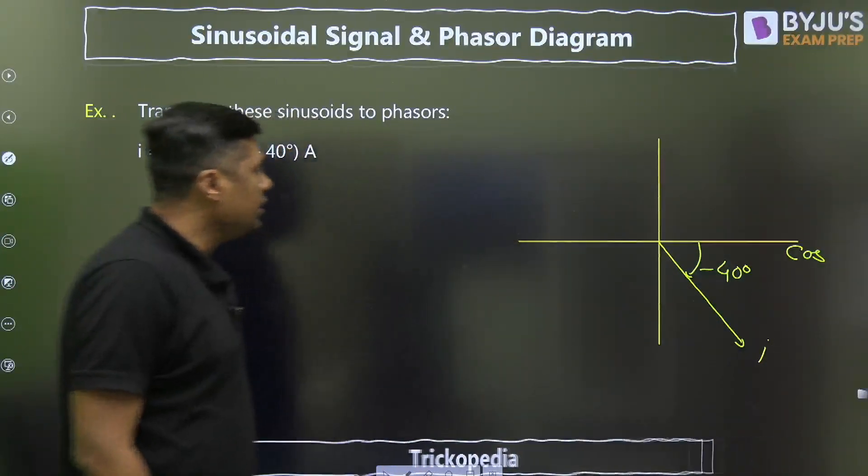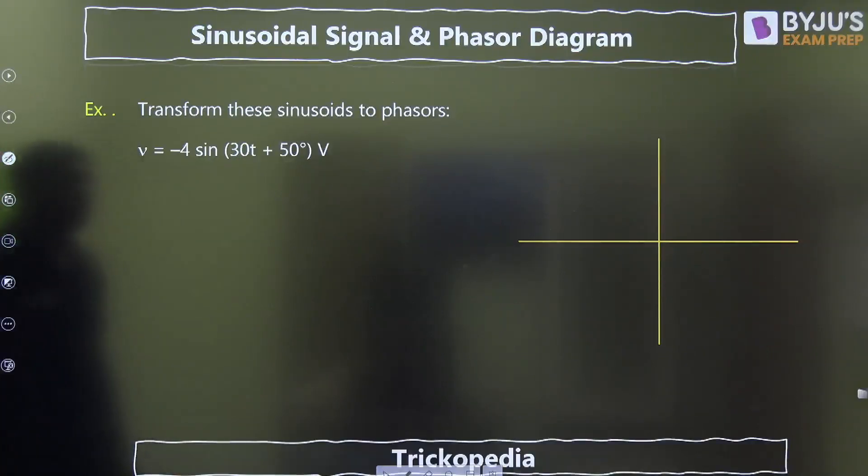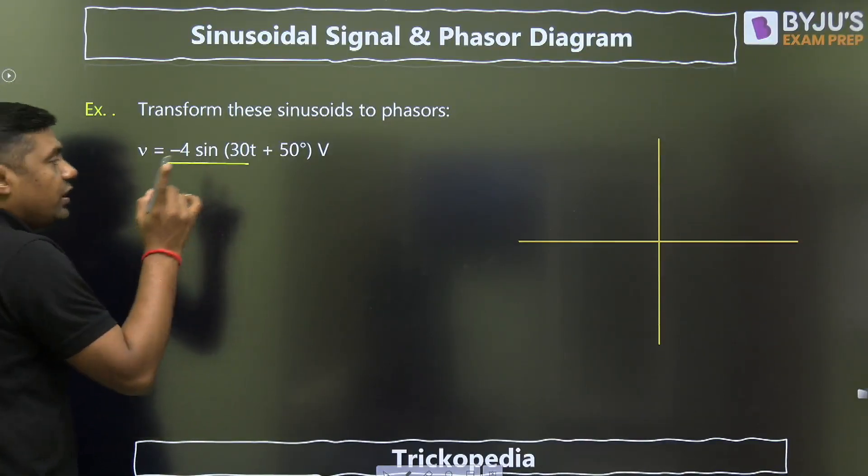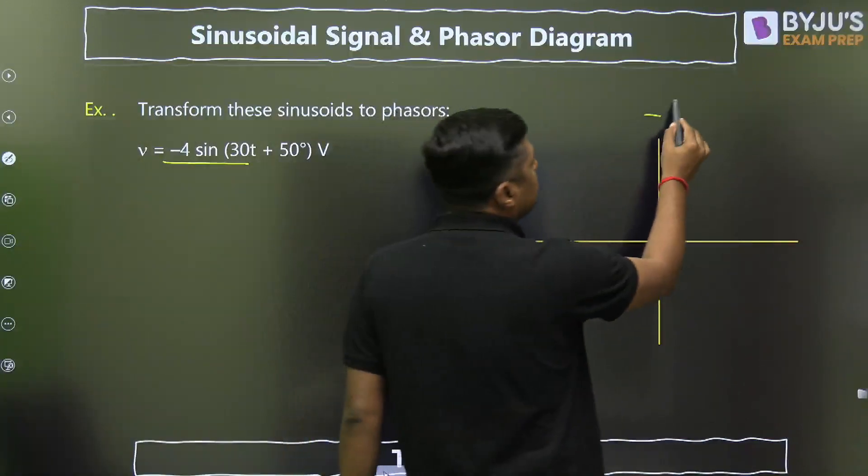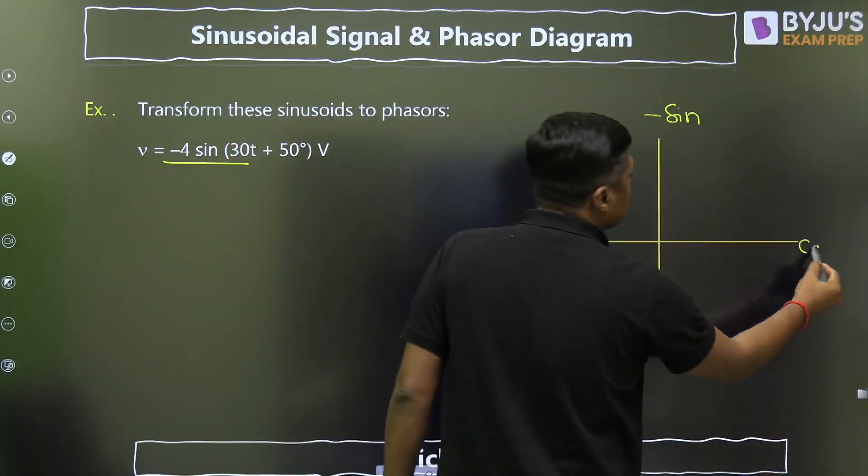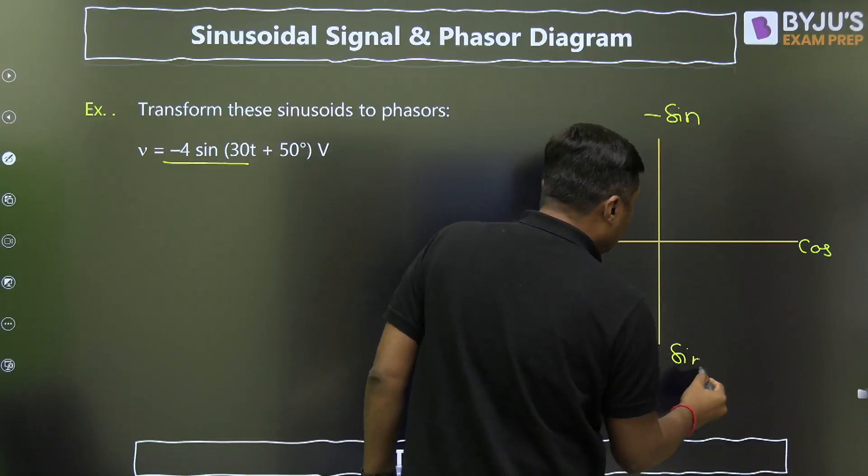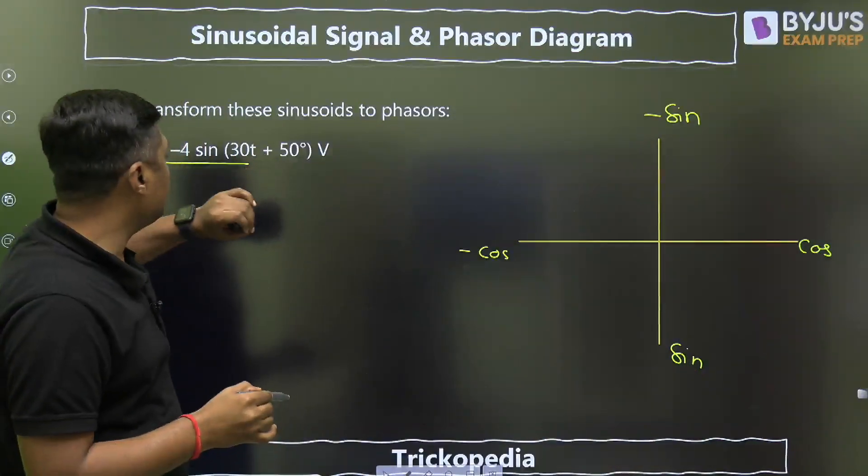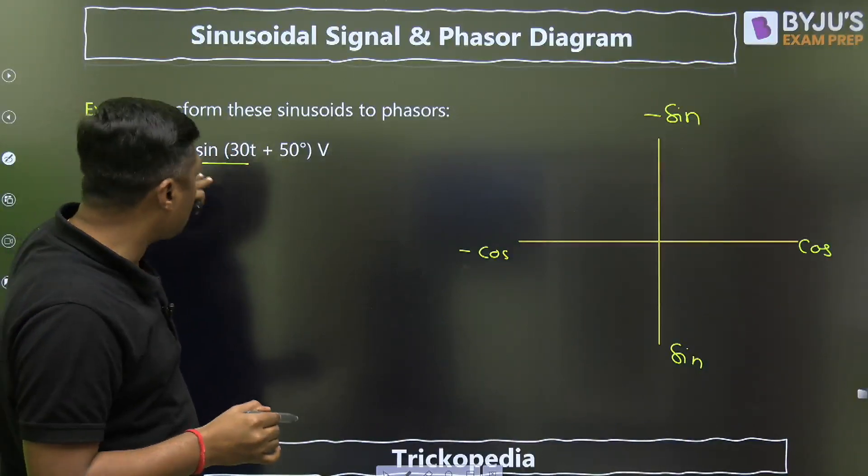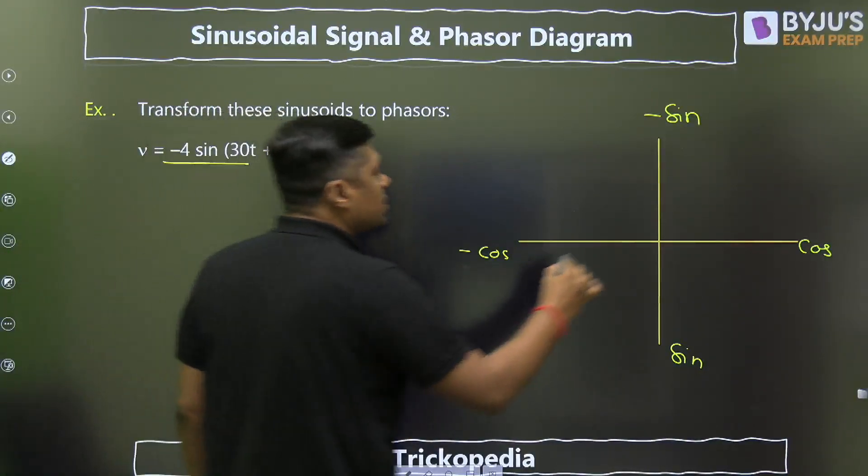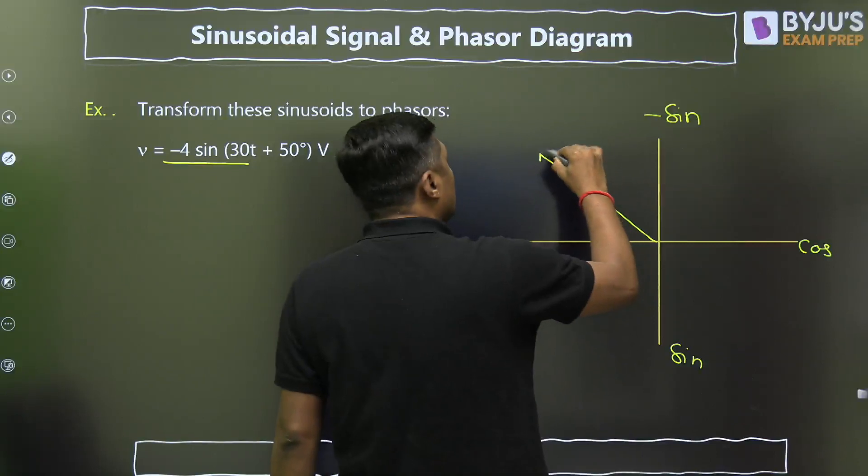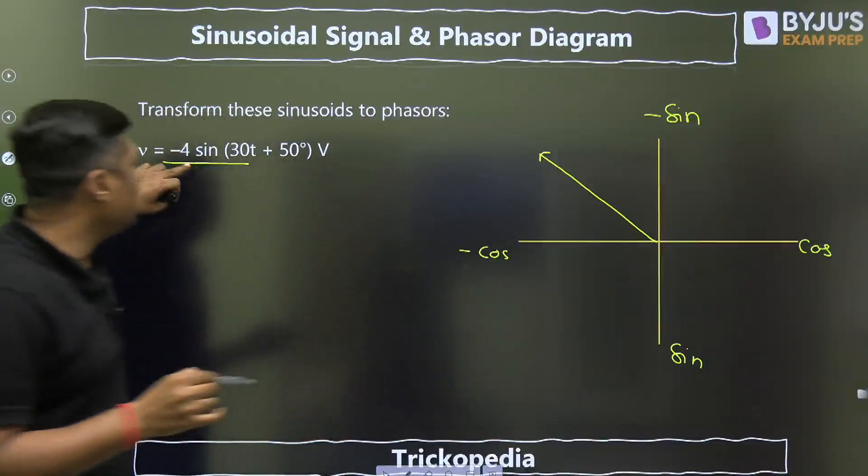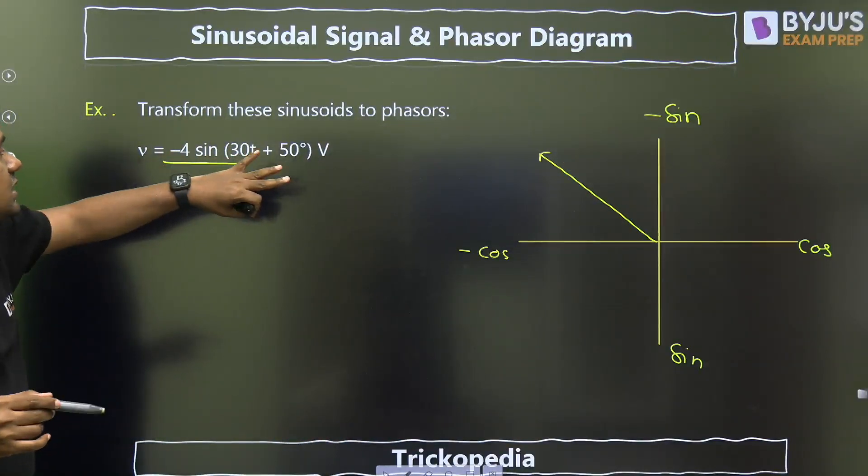Then second question. Minus 4 sin of 30t. This is the minus and sin. Where is the minus sign? This is the minus sign. This is cos, this is sine, this is minus cos. Now you can represent plus 50 degrees. Plus 50 means clockwise direction with respect to that. So this is the plus 50 degrees. And it will give the amplitude of that 4, and this is the plus 50, and that is the representation.